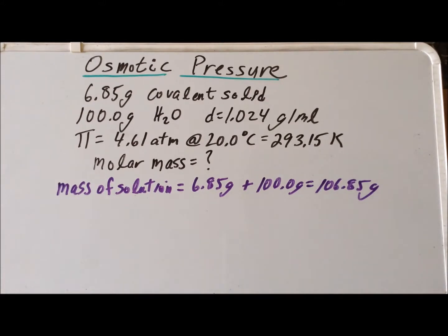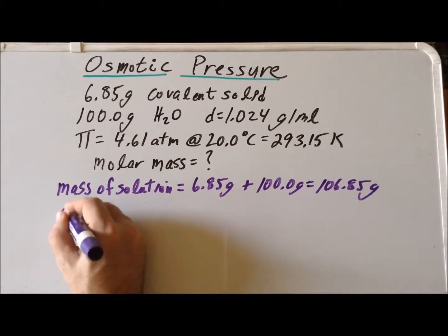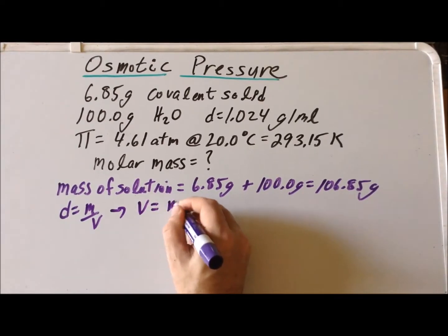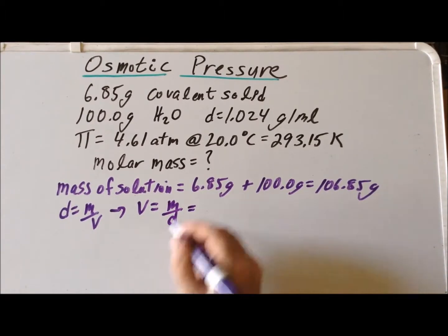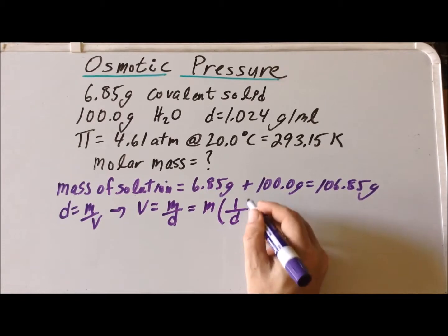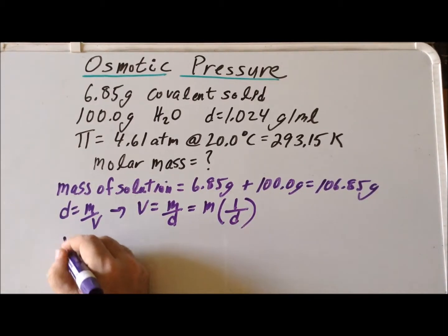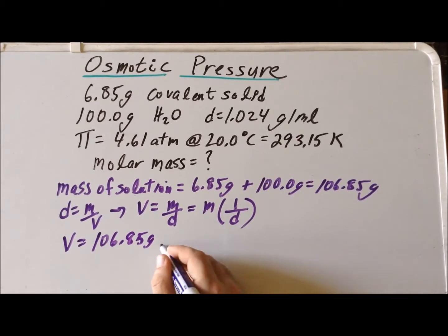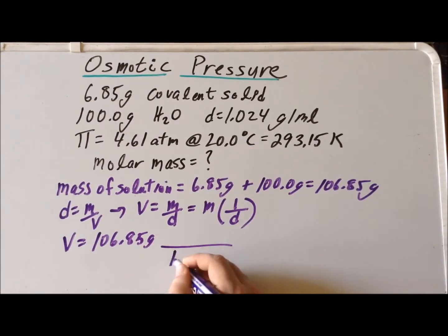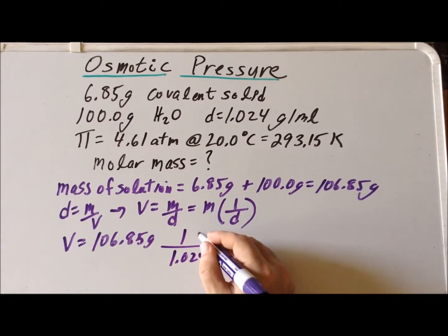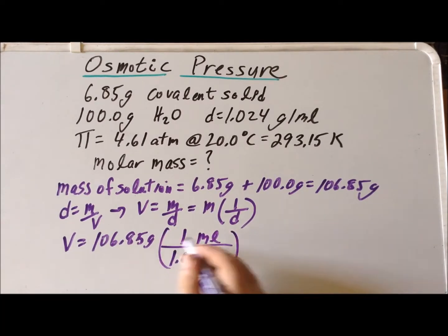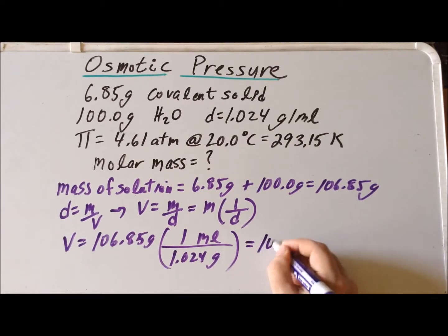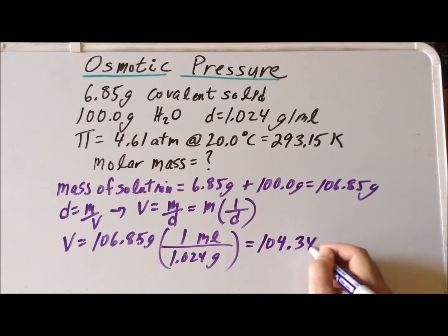We can also use this mass to determine the volume of the solution. Recall that density equals mass divided by volume, which rearranges to volume equals mass divided by density — equivalently, mass times 1 over the density. So the volume is 106.85 grams multiplied by the reciprocal of the density, 1 milliliter per 1.024 grams, giving a volume of 104.346 milliliters.